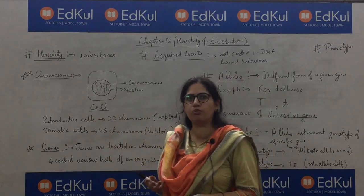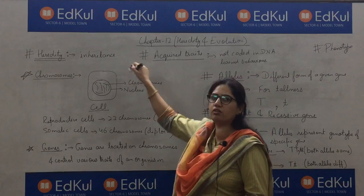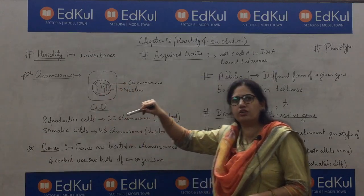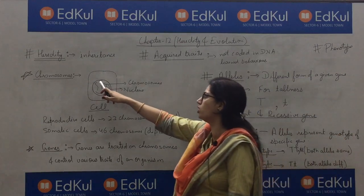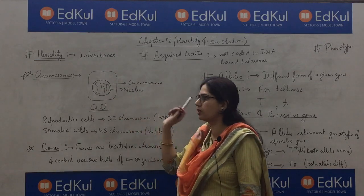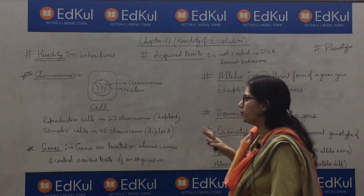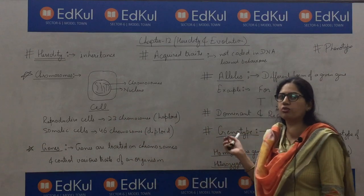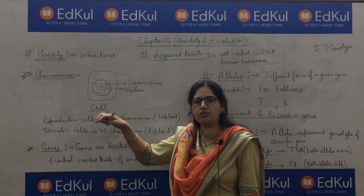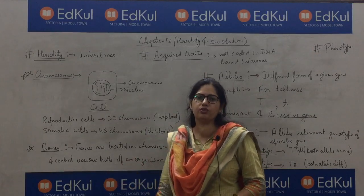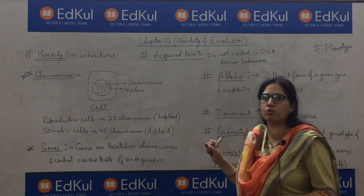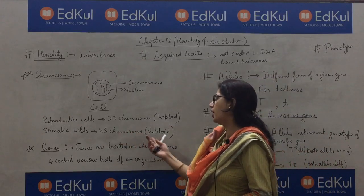Our body is made up of millions of cells. Inside every cell, a nucleus is present. Inside this nucleus, genetic material is present — that is chromosomes, which are long thread-like structures. Reproductive cells contain 23 chromosomes, which is half the number. All somatic cells — that means all cells inside our body other than reproductive cells — contain 23 pairs of chromosomes, that is 46 chromosomes.